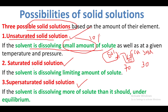In a saturated solid solution, the solvent dissolves the limiting amount of solute. The limiting amount means the solvent has dissolved the maximum possible amount — approximately 20 percent — of the solute it can hold.